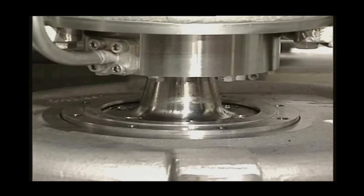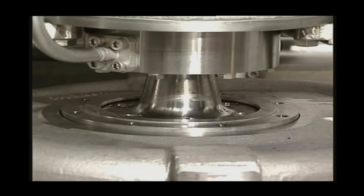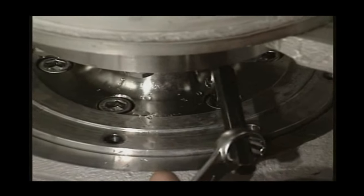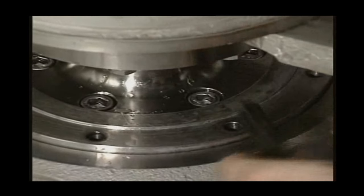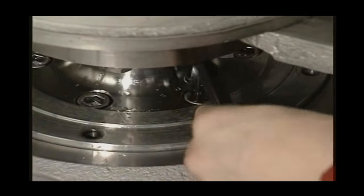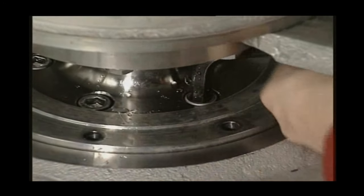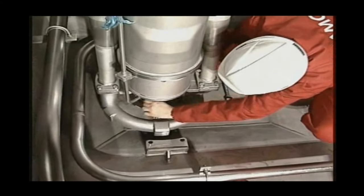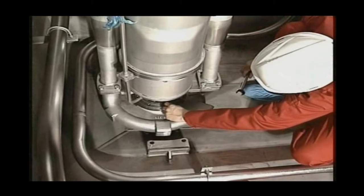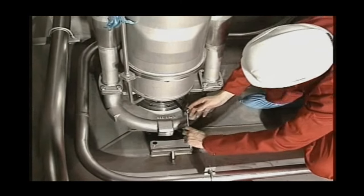Loosen the bolts for upper wear ring support. Then loosen the bolts for impeller hub two turns only. Turn the impeller clockwise for easier access and better working condition for loosening the bolts.